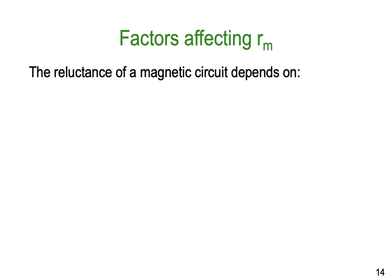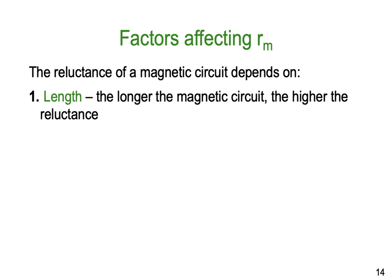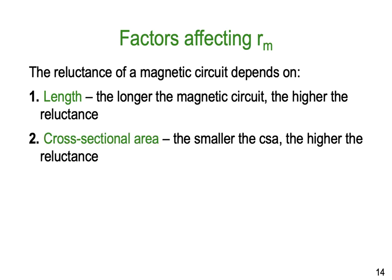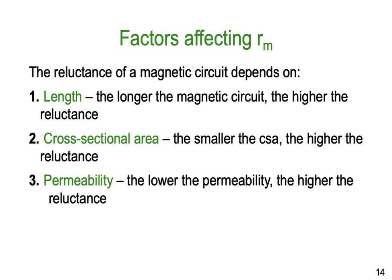Just like we had factors affecting resistance, there are factors affecting reluctance Rm. First: the length — the longer the magnetic path, the higher the reluctance or its resistance to the field. Second: cross-sectional area — the higher the area, the lower the reluctance. Third: permeability — the lower the permeability, the higher the reluctance. This is exactly analogous to a resistor: it could be compared between the resistance of a steel wire and a copper wire — copper has much better conductivity and lower resistance, so here the lower the permeability, the higher the reluctance and the lower the ability to conduct a magnetic field.